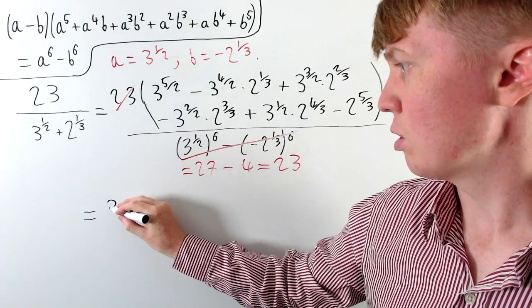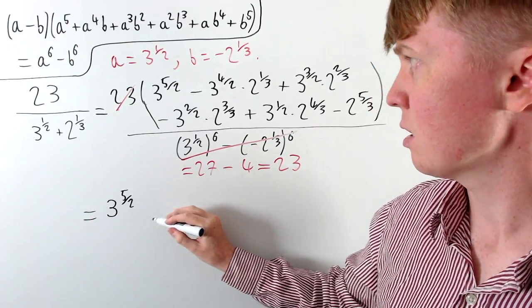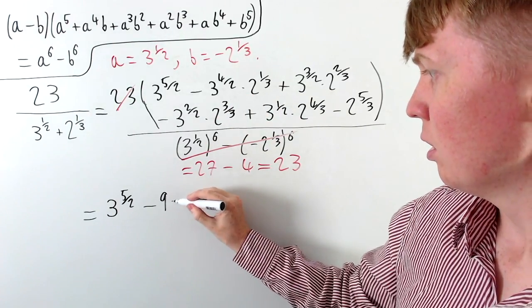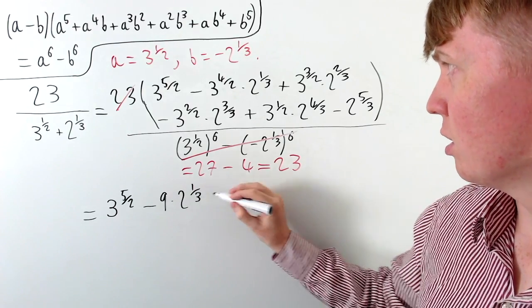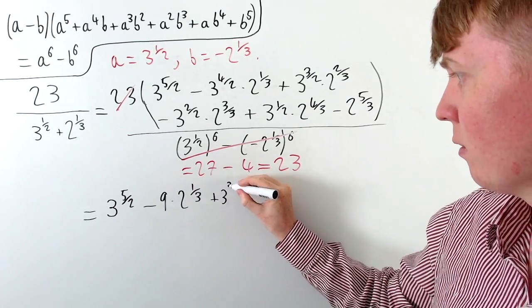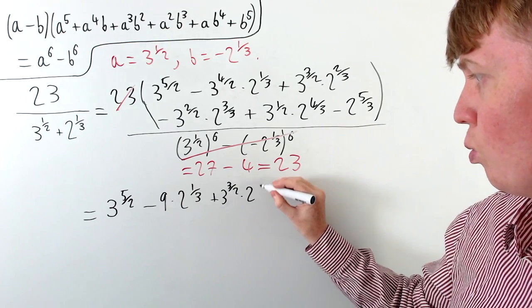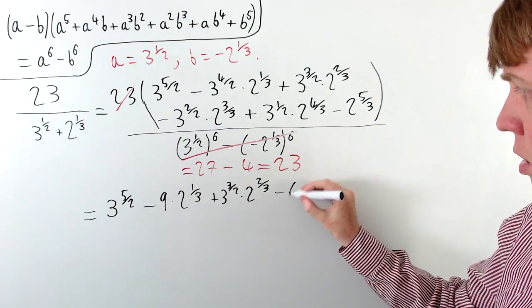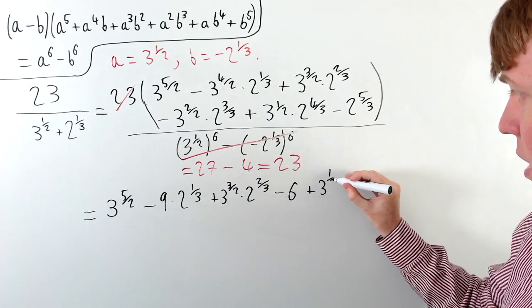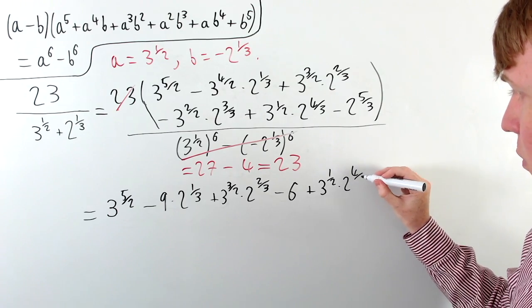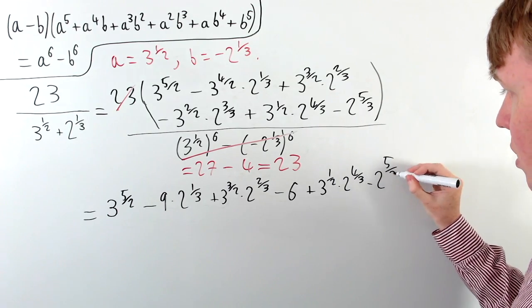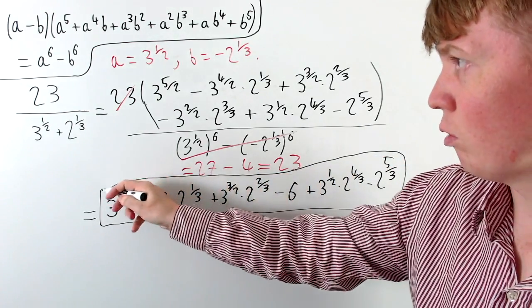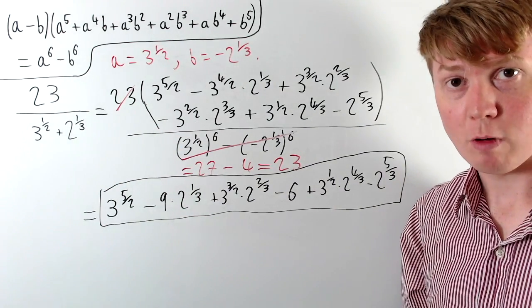We just have the expanded bracket, which we can now simplify to get our final answer. The first term is 3 to the 5 over 2. Then minus 9 times 2 to the power of one third, then plus 3 to the 3 over 2 times 2 to the 2 over 3, then minus 6, then plus 3 to the half times 2 to the 4 over 3, and finally minus 2 to the 5 over 3. This entire expression is equivalent to our original fraction, but now with a rationalised denominator.